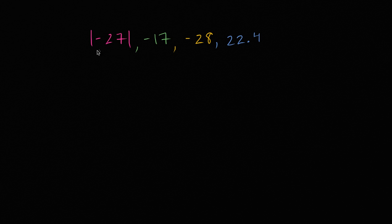So what we have here is four different values, some expressed with negative numbers or absolute value. I want to sort them from least to greatest, where the least is on the left and the greatest is on the right.